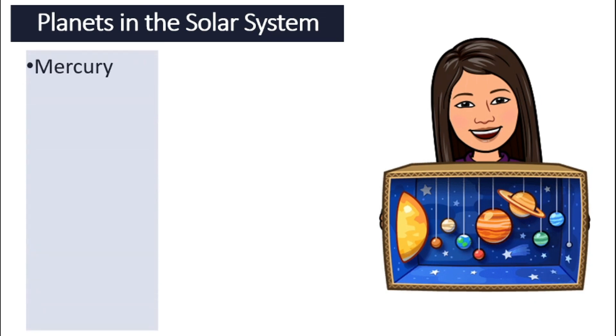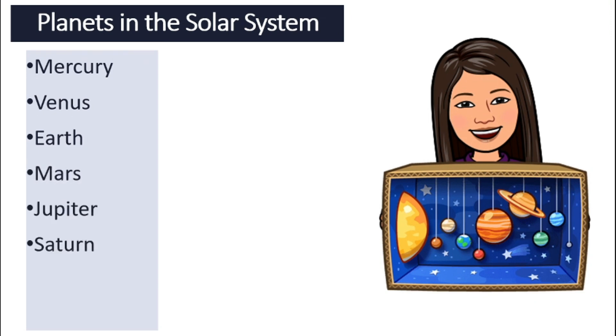The first one will be Mercury, followed by Venus, Earth, Mars, Jupiter, Saturn, Uranus, and Neptune.